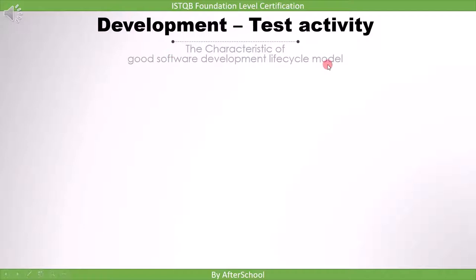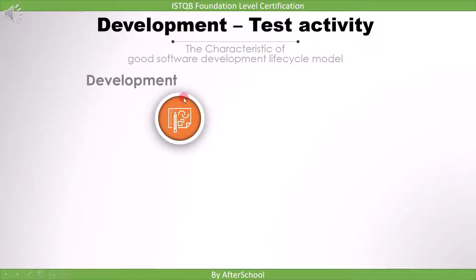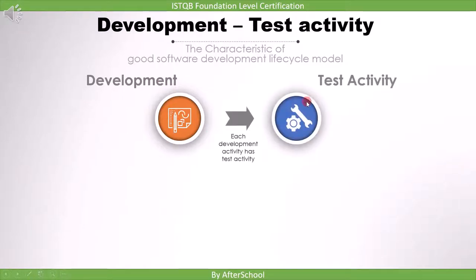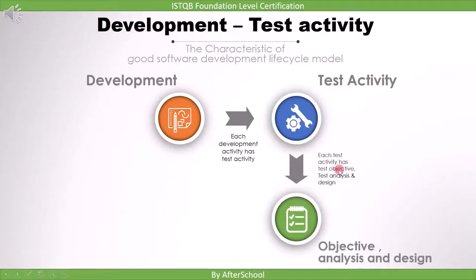Let's begin by studying the characteristics of a good software development lifecycle model. When you have a new project, you will select a software development lifecycle model according to the requirements of the project. Once you select the model, you can add characteristics to make it more suitable. Each development activity should have a corresponding test activity, and each test activity must have an objective, analysis, and design.